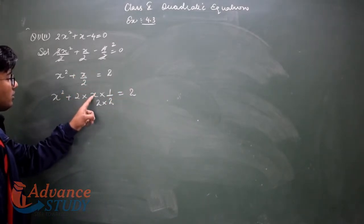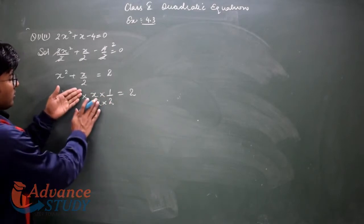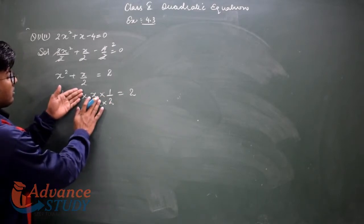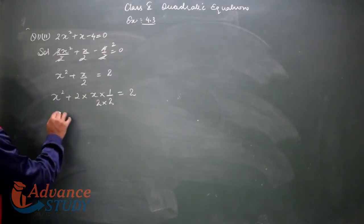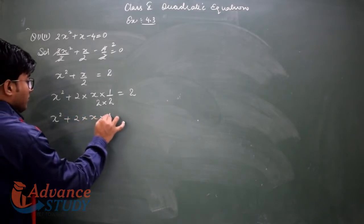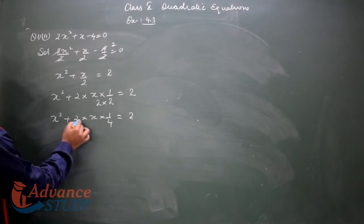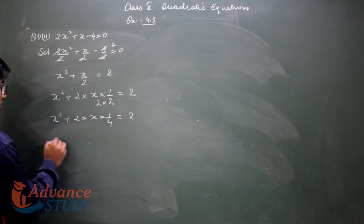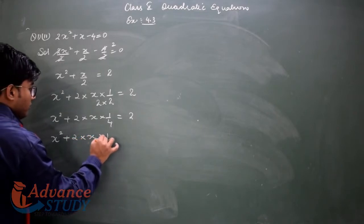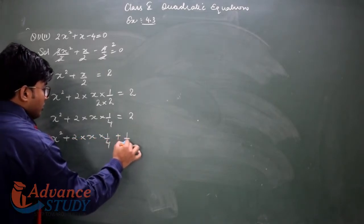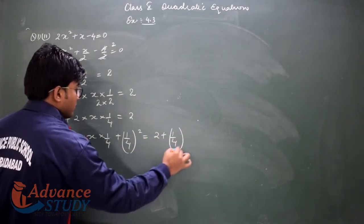Since x/2 was already there, and we multiplied 2 from our side, the top number stays the same — it becomes x/2 after multiplication. So we write x² + 2 into x into 1 upon 4 equal to 2. In the form a² + 2ab, we identify b. We add b² to both sides: x² + 2 into x into 1/4 + (1/4)² equals 2 + (1/4)².